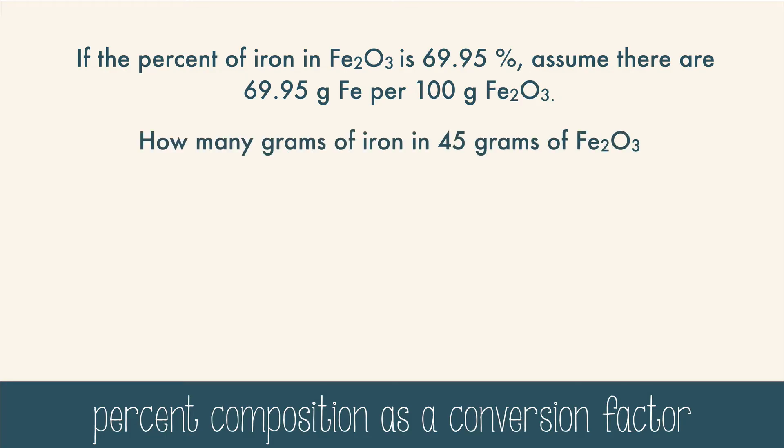Then, if you have 45 grams of iron oxide, you can find out how many grams are in the iron. 45 grams times 69.95 grams of iron divided by 100 grams of iron oxide equals 31 grams of iron.